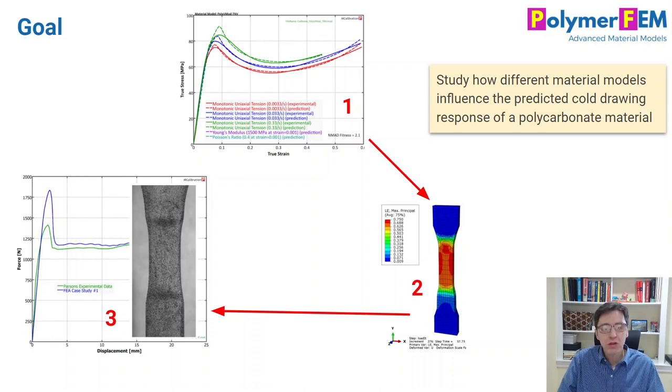When this happens you get a localized deformation in the cross-section of the specimen that you can see in the photo down here. The question is really how can you analyze data like that, and to start answering that question I will today talk about how the material model that you use influences a finite element simulation of such an experiment.